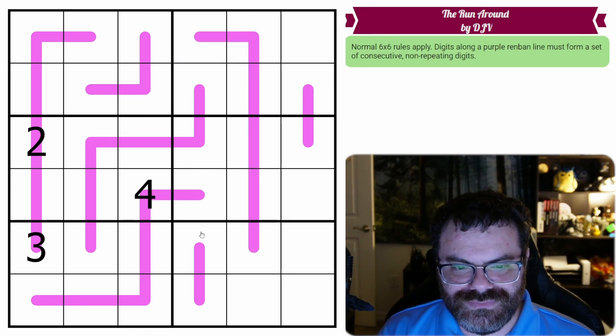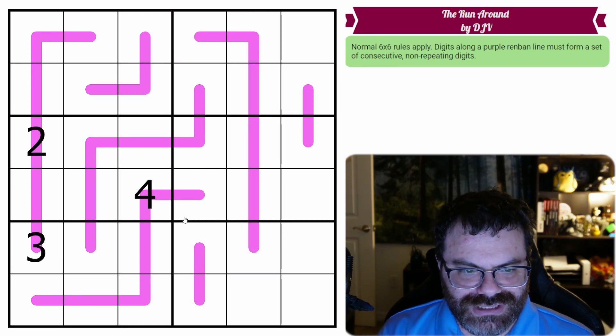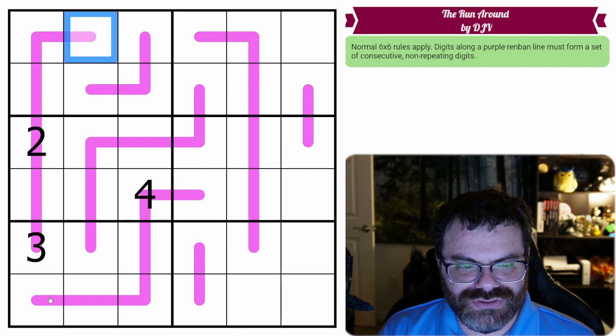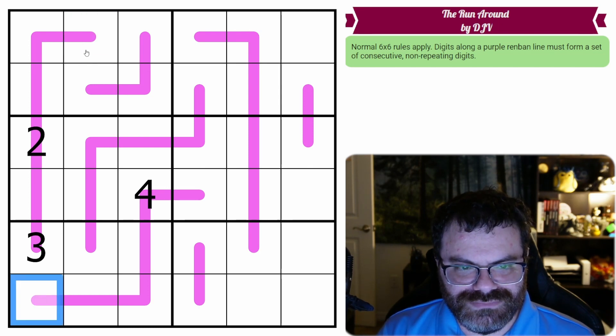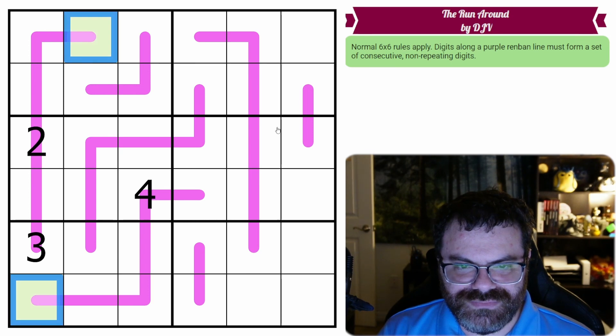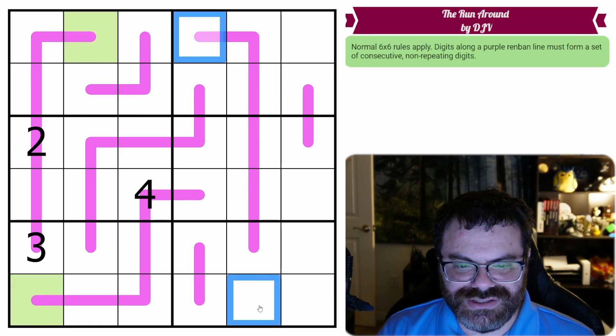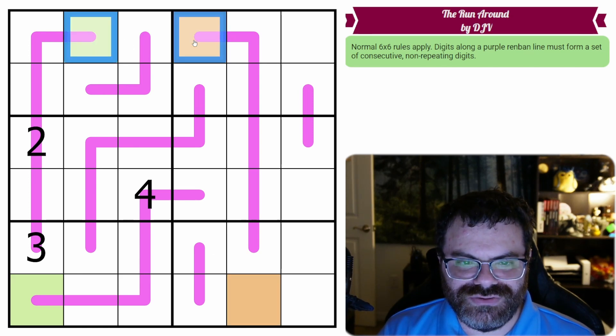So for example, this cell here goes here. Let's just mark that in green so we remember. And then this cell here goes here. So let's mark that in orange so we remember, just to say these are the same digit as each other. And we know green and orange are different.